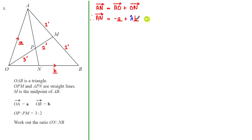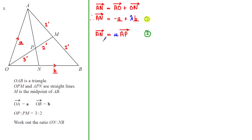The scalar λ represents a fraction of the vector b, equivalent to the vector ON. If we can find λ, we can find the ratio ON to NB by converting between fractions and ratios. To find λ, we need another expression for the focus vector AN. Since the points A, P and N lie on the same straight line, we can write AN = μ·AP, where μ is a positive scalar different from λ.